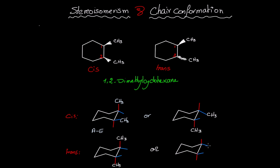Or both CH₃ groups could be on equatorial bonds, since one equatorial is facing up and the other equatorial is facing down. So for the trans isomer of 1,2-dimethylcyclohexane, it's either axial-axial or equatorial-equatorial.